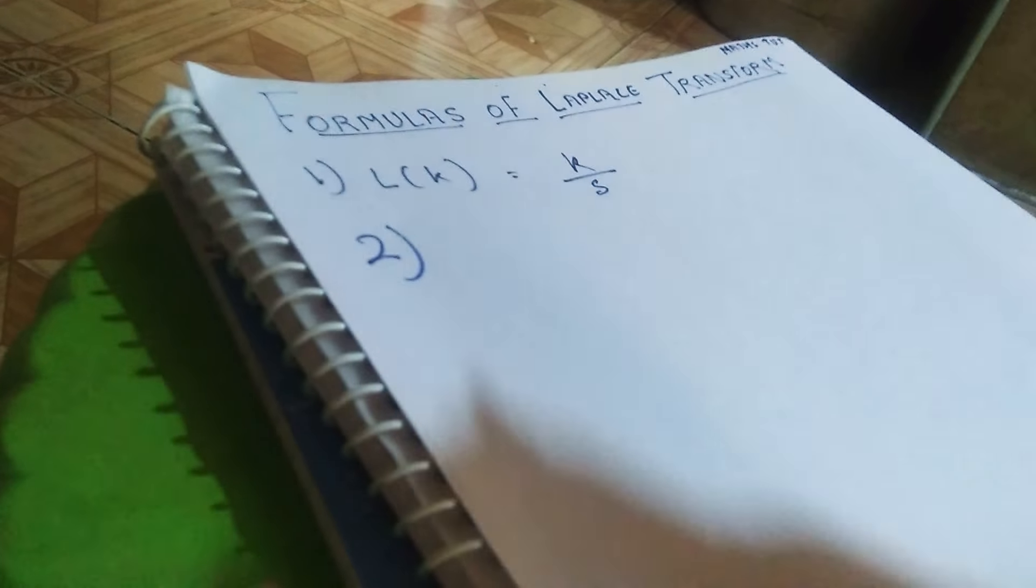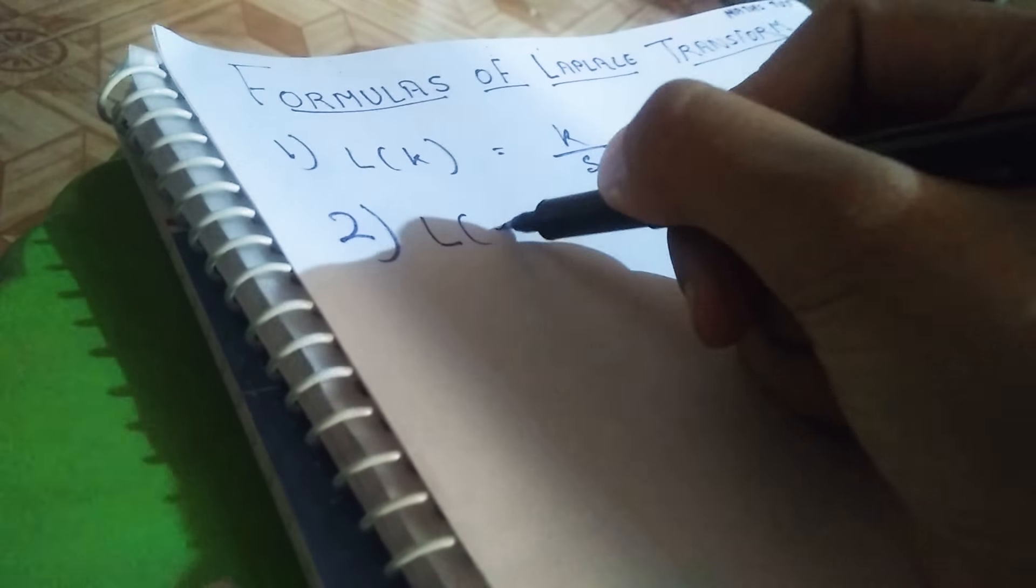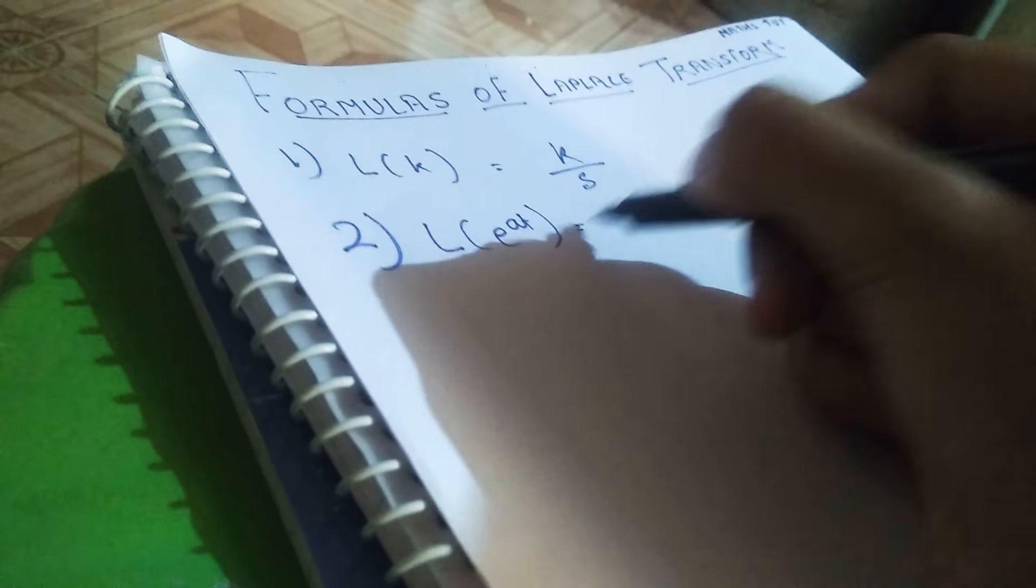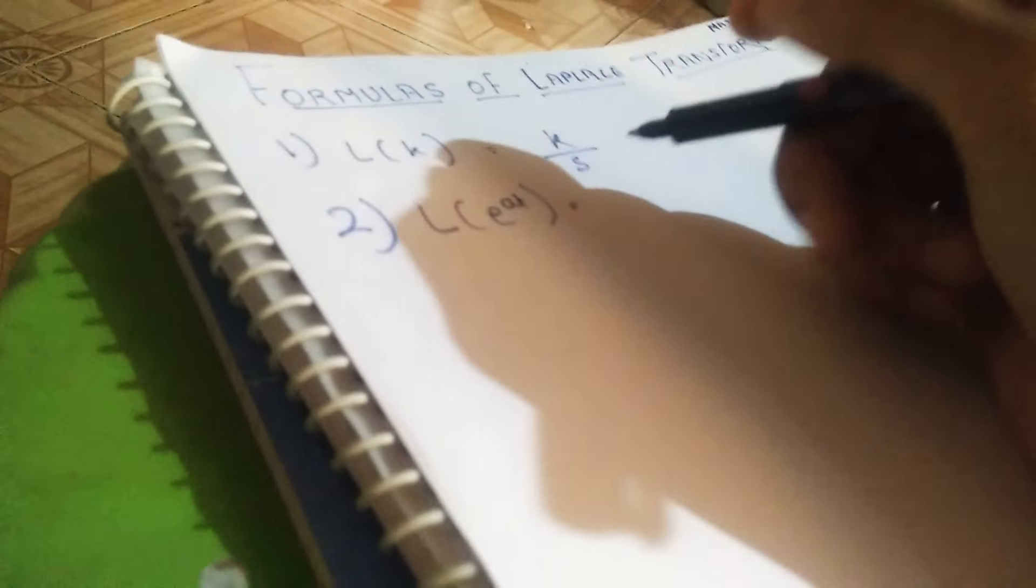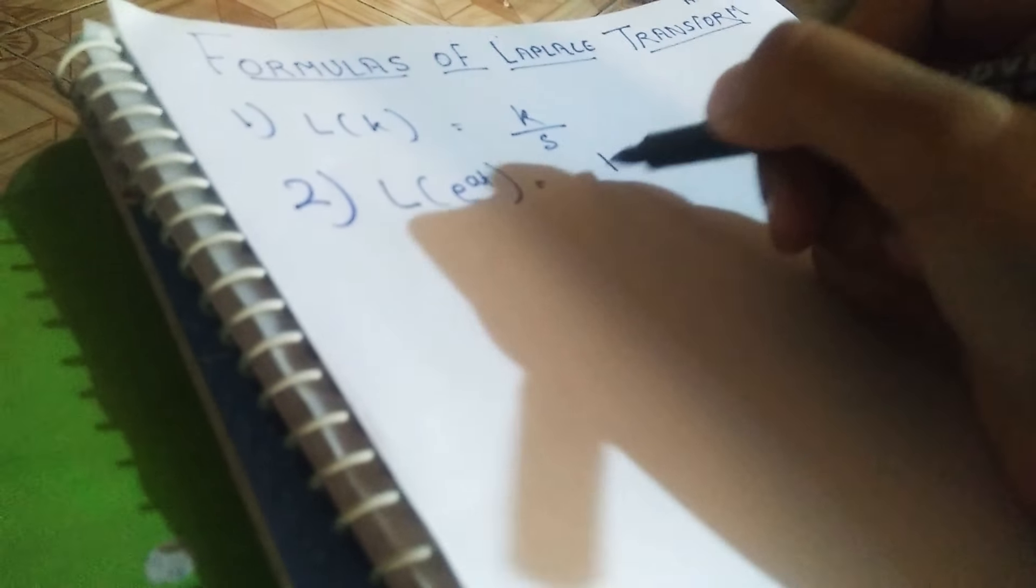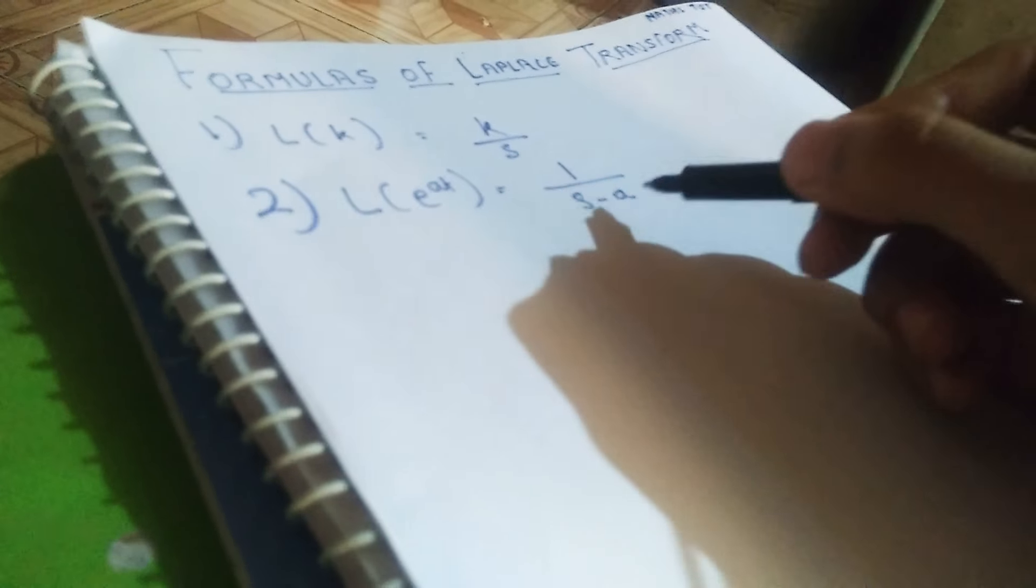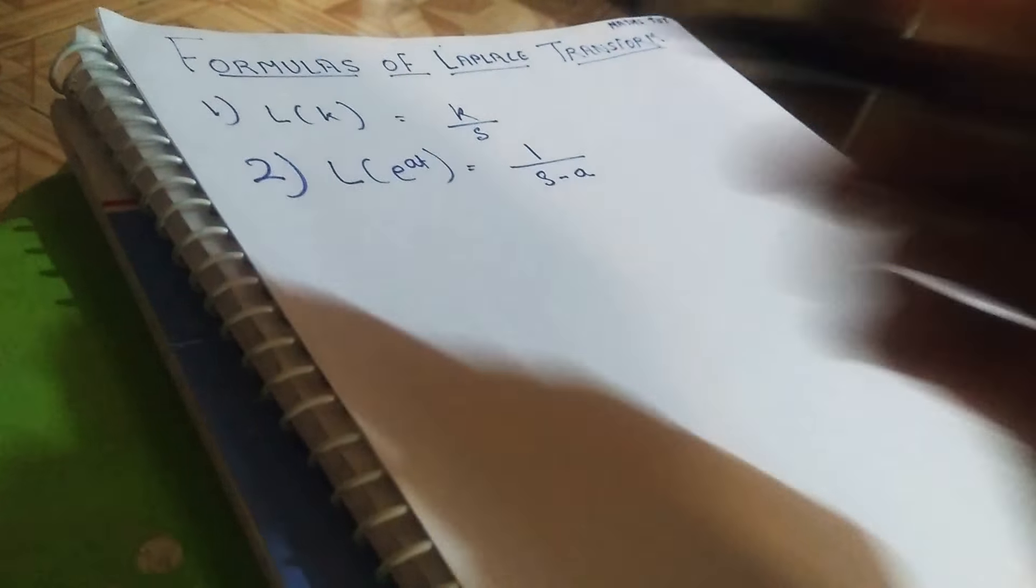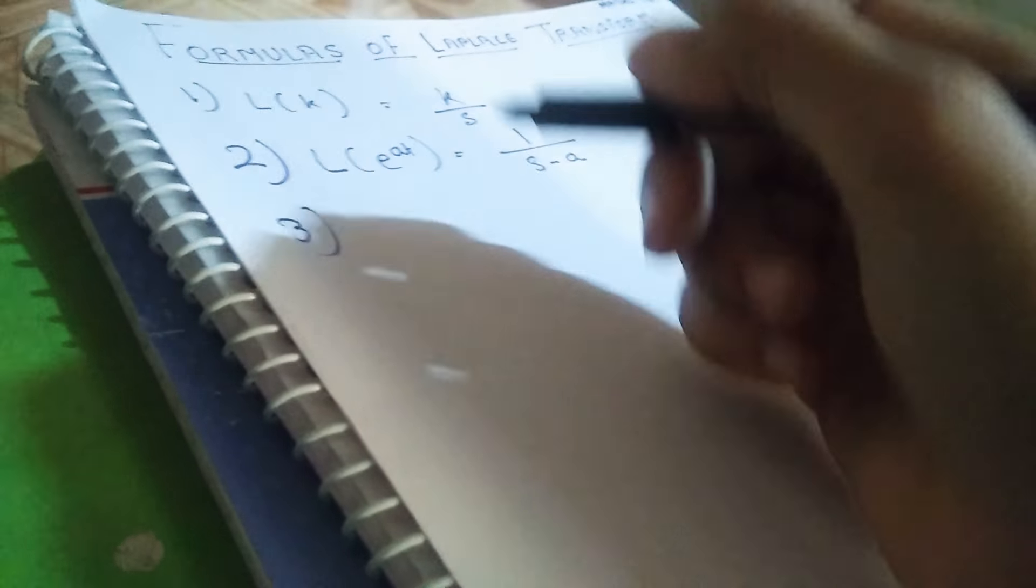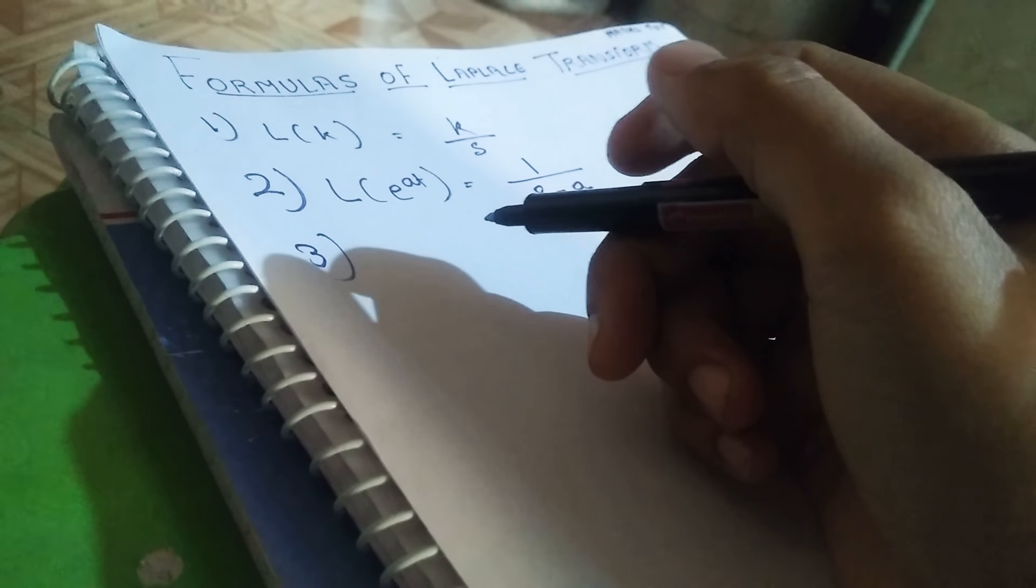Second one is Laplace of e raised to at. a is any number: 1, 2, 3, 4. If it is e raised to 2t, then my formula would be 1 by s minus 2, or here s minus a. a would be a number; it would be replaced by any number as per the question or requirement. Laplace of c raised to at.